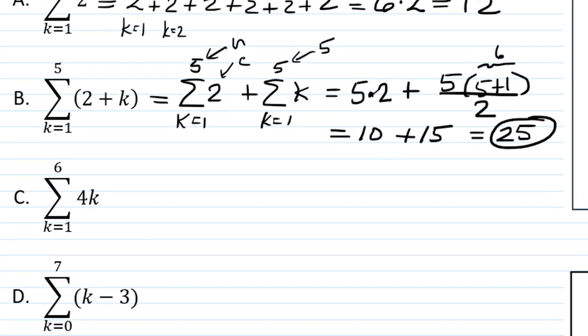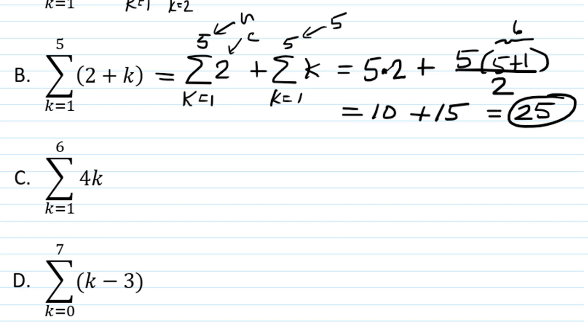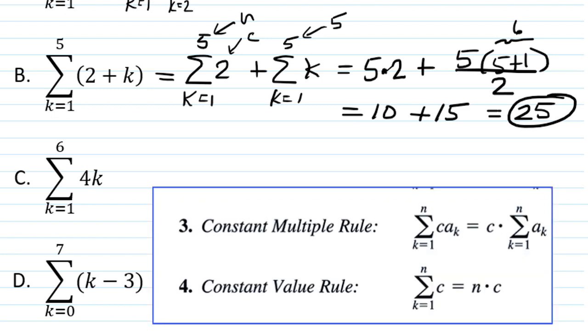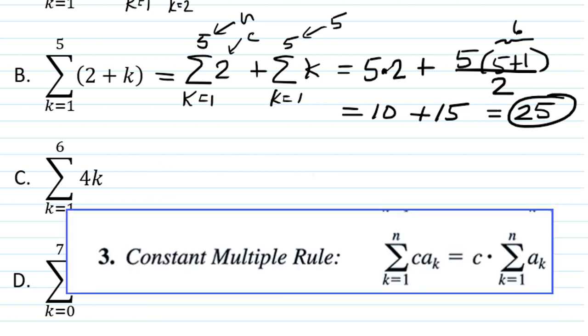Now let's look at part C. We have the sum k equals 1 to 6 of 4k. So for this one, we don't have a constant. We have a constant multiple, a coefficient on the k. And so we're going to use the idea that what's happening here is we're going to have a whole sequence of terms, each one of them having a factor of 4. And so of course we can factor that 4 out.